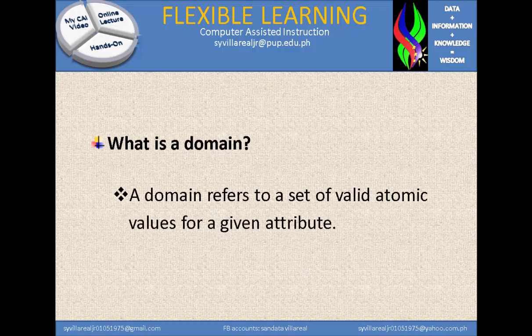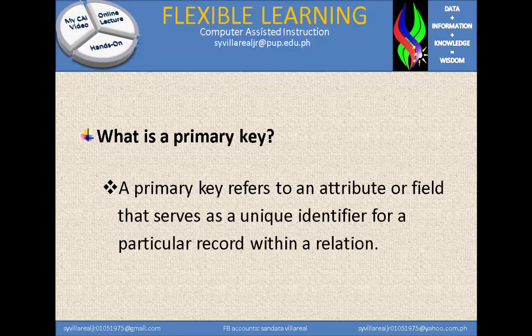Then, what is a domain? A domain refers to a set of valid atomic values for a given attribute. Next, what is a primary key? A primary key refers to an attribute or field that serves as a unique identifier for a particular record within a relation.